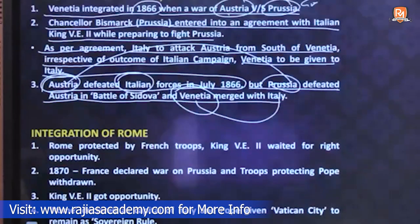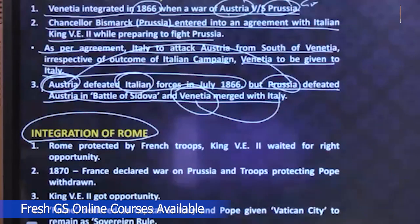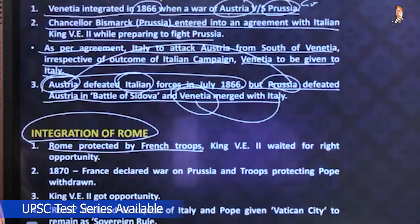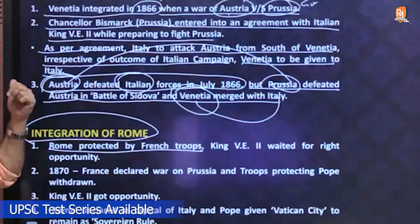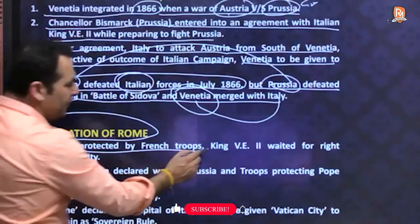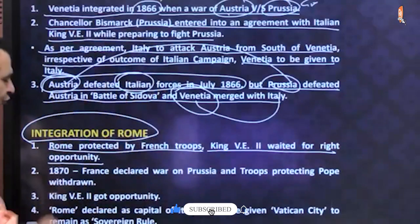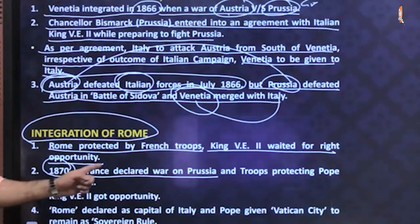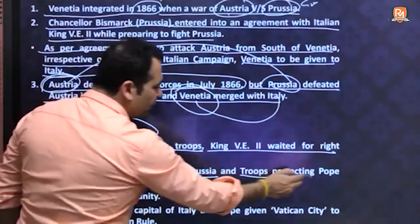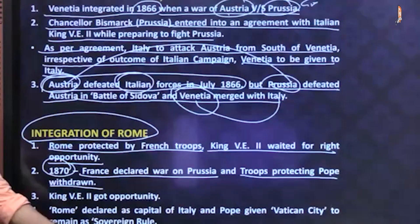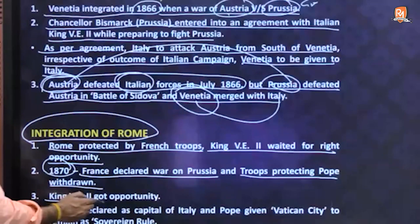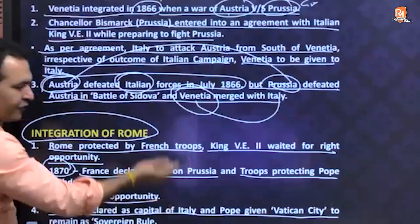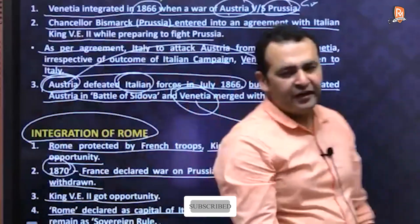In 1866, when Austria and Prussia fought, Piedmont-Sardinia got Venetia. Then in 1870, when France and Prussia fought, French soldiers left central Italy. The Italian army came from north and south both sides. The Pope was given a choice: surrender the territory and rule as sovereign of Vatican, with Rome becoming the capital of United Italy, or face force. The Pope agreed, Italy was unified in 1870.